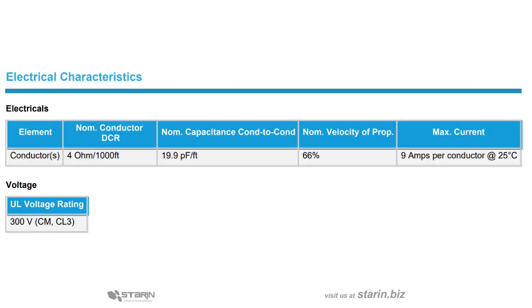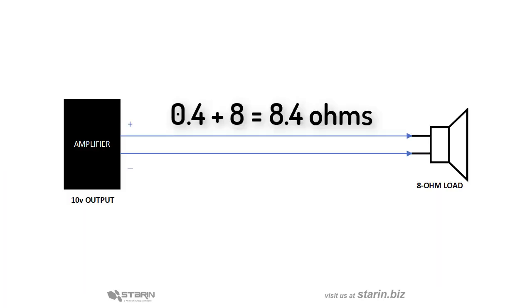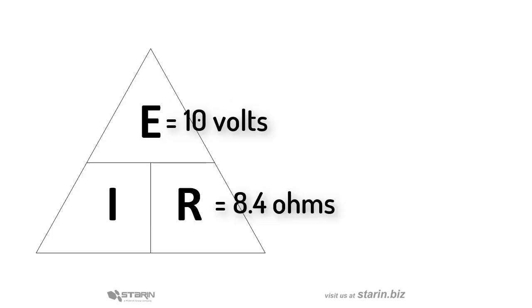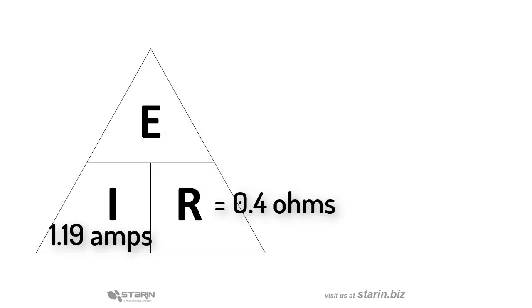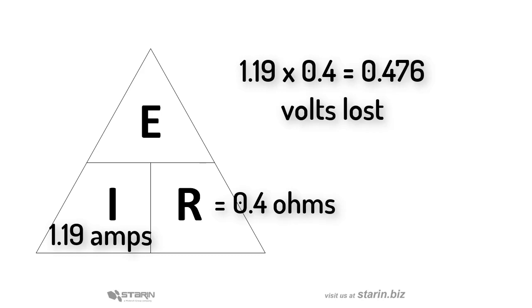Now let's do the same thing for the 16 gauge cable. Here the resistance is 4 ohms per thousand, which is 0.4 ohms per 100 feet. Add this to the speaker load to get 8.4 ohms. Now we divide 10 volts by 8.4 ohms to get 1.19 amps, which we'll multiply then by 0.4 to get 0.476 volts lost.